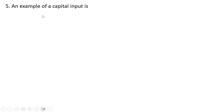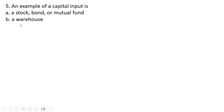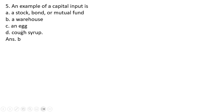Question 5: An example of a capital input is — a warehouse, that is correct. Answer choice B. C and D are just consumer goods.